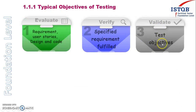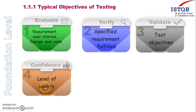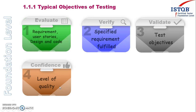So the first three objectives are: evaluate the requirement, verify that we are fulfilling the available requirements, and check that the system as a whole is working as per the customer's requirement. The fourth objective is to increase the level of quality in our product by finding more defects, by putting a good testing process in place, and ensuring that the level of quality is maintained at each stage of testing.